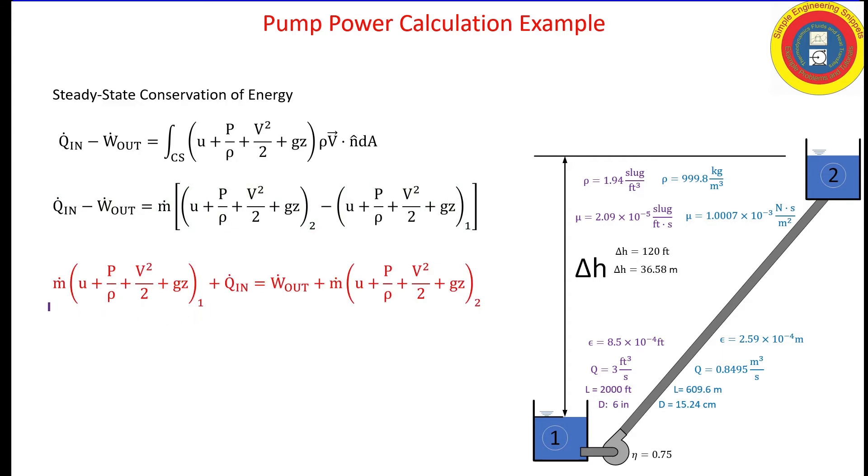To make sure this makes physical sense: we start off with the amount of energy, it's actually a rate of energy but let's just call it energy for now, plus the amount of energy going into the system due to heat transfer. That must equal, by conservation of energy, the rate of work out plus whatever is left over at point two.